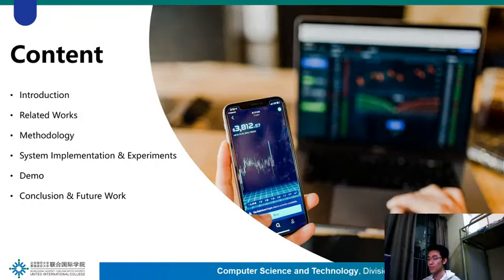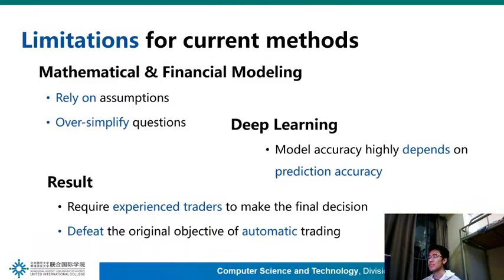Nowadays, both financial modeling and deep learning have limitations in generating trading strategies. For mathematical and financial modeling, they rely on assumptions that generally oversimplify the problem. For deep learning, model performance highly depends on prediction accuracy. These all require experienced traders to make final decisions, which defeats the original objective of automatic trading.